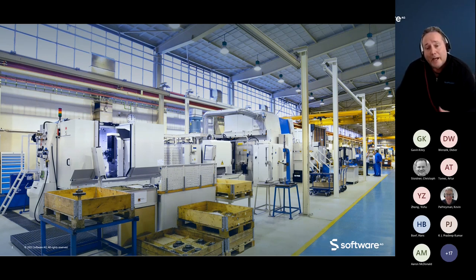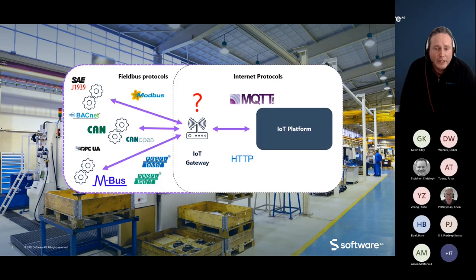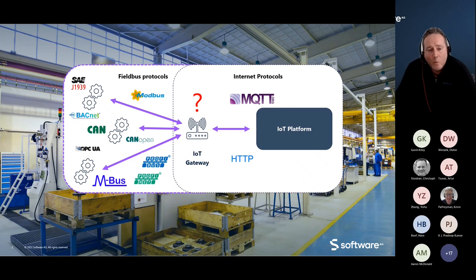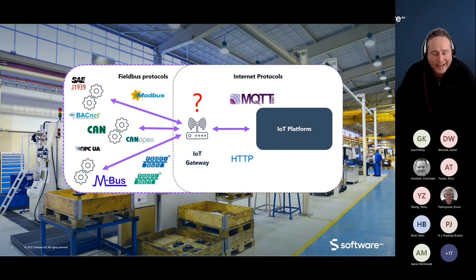Device connectivity means connectivity across a multitude of different asset types — machines, sensors, industrial PCs, or any type of asset we want to monitor and control remotely. So what is typically a challenge in that space? We typically have to introduce some sort of gateway device, a proxy, or a firmware or software change on these vendor devices.